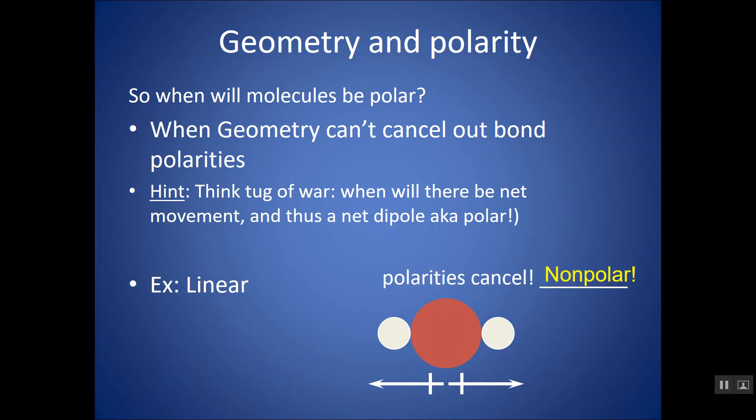Essentially, a linear structure — as long as your two atoms on each side are the same — is always going to be a nonpolar molecule.